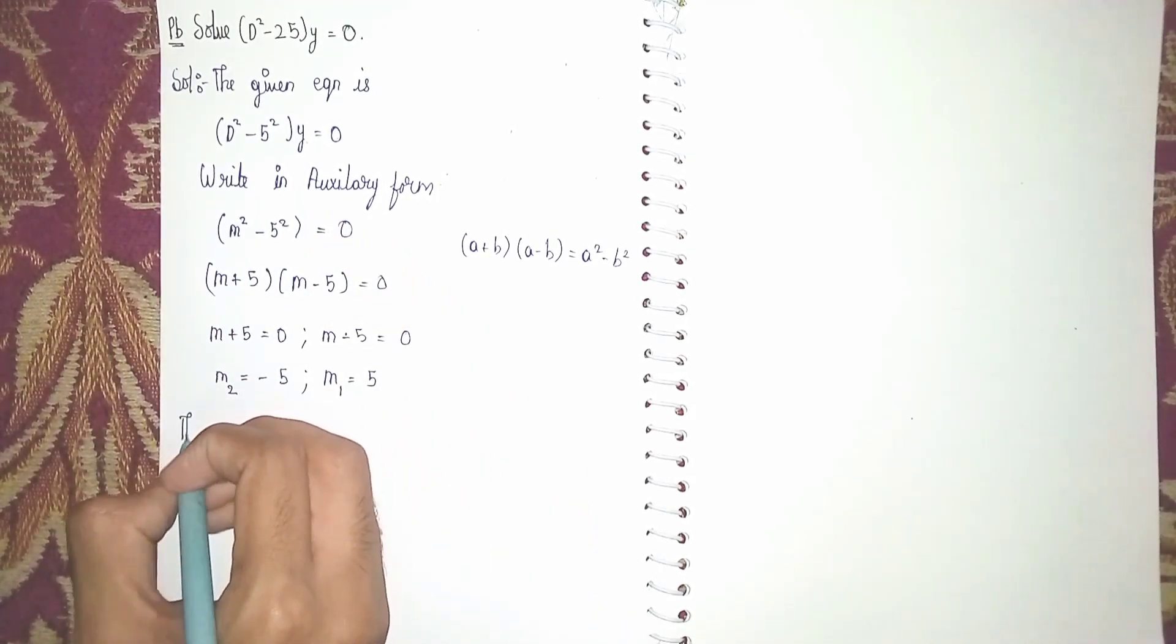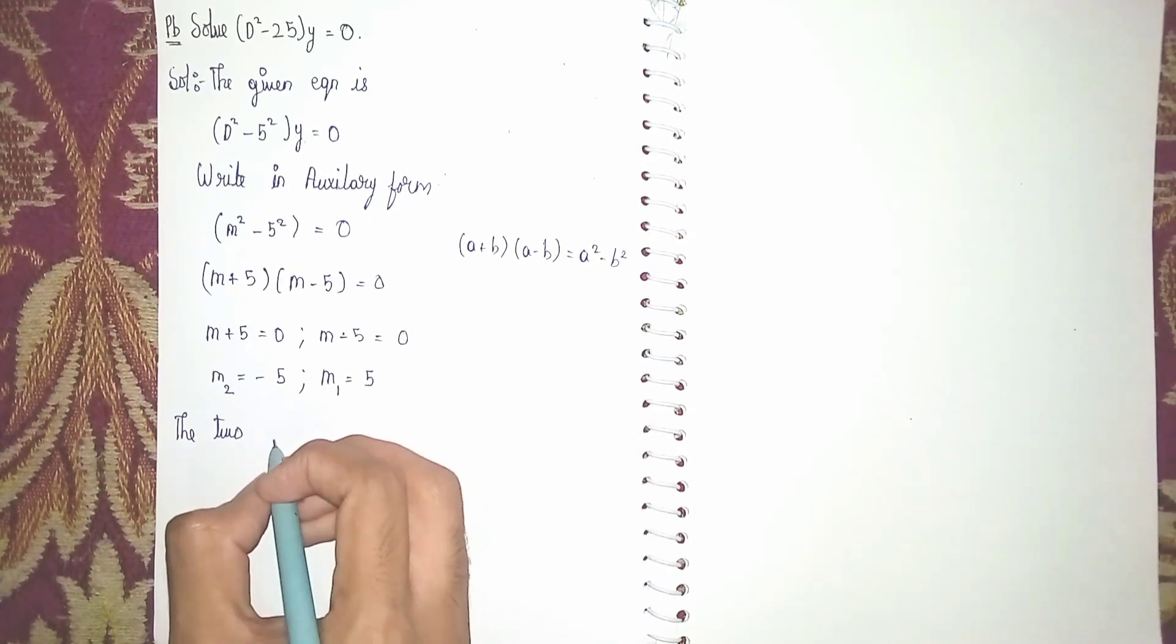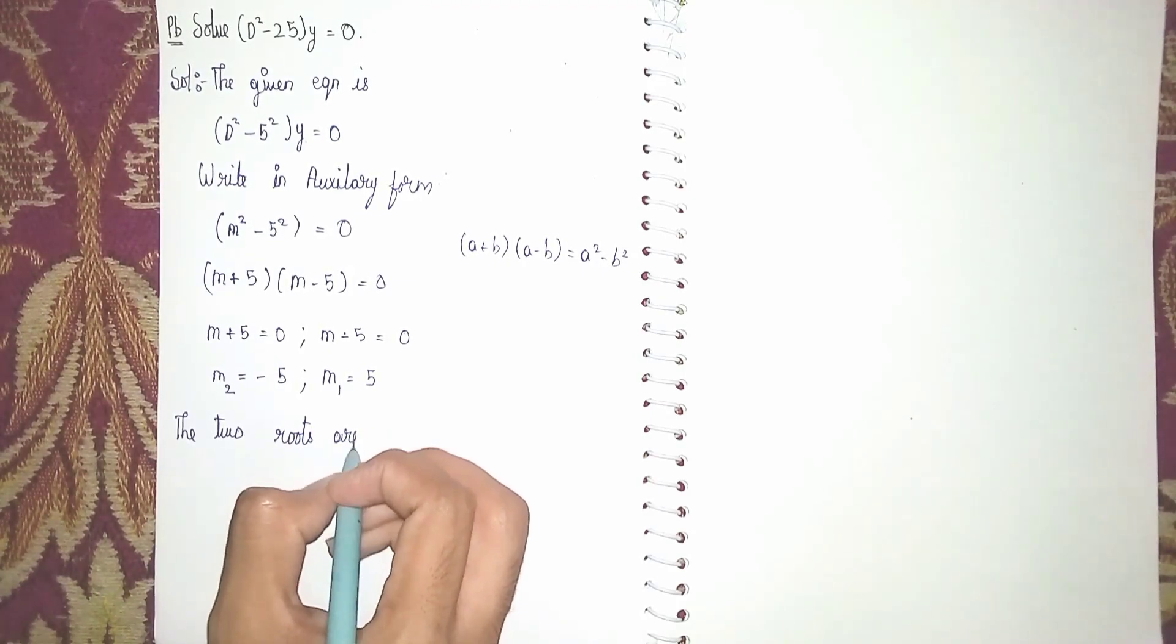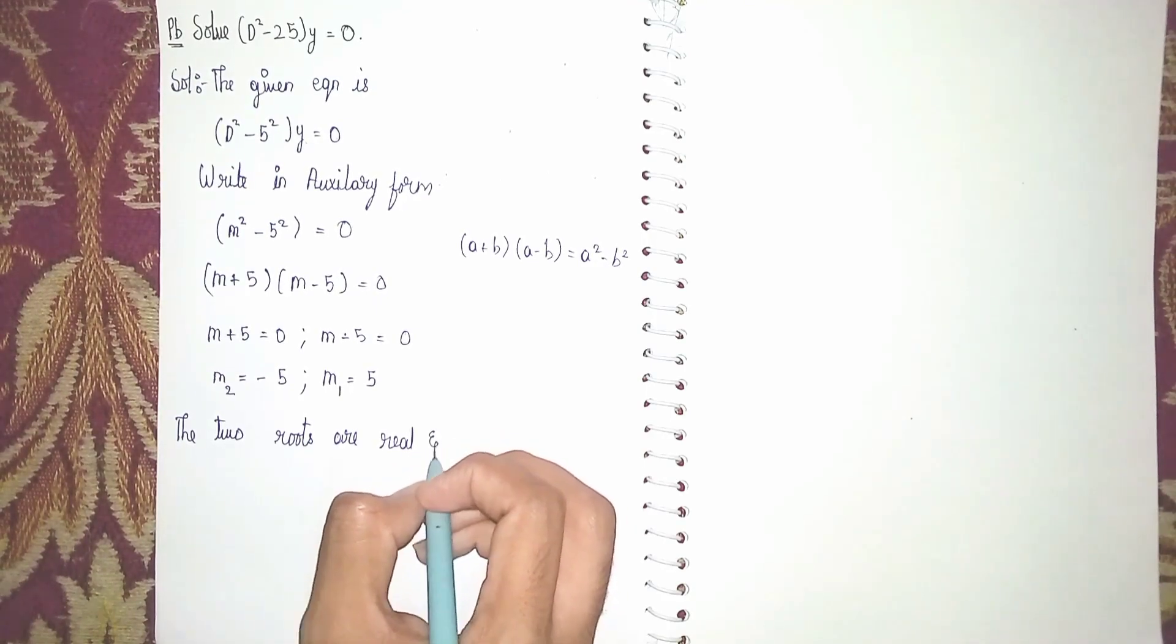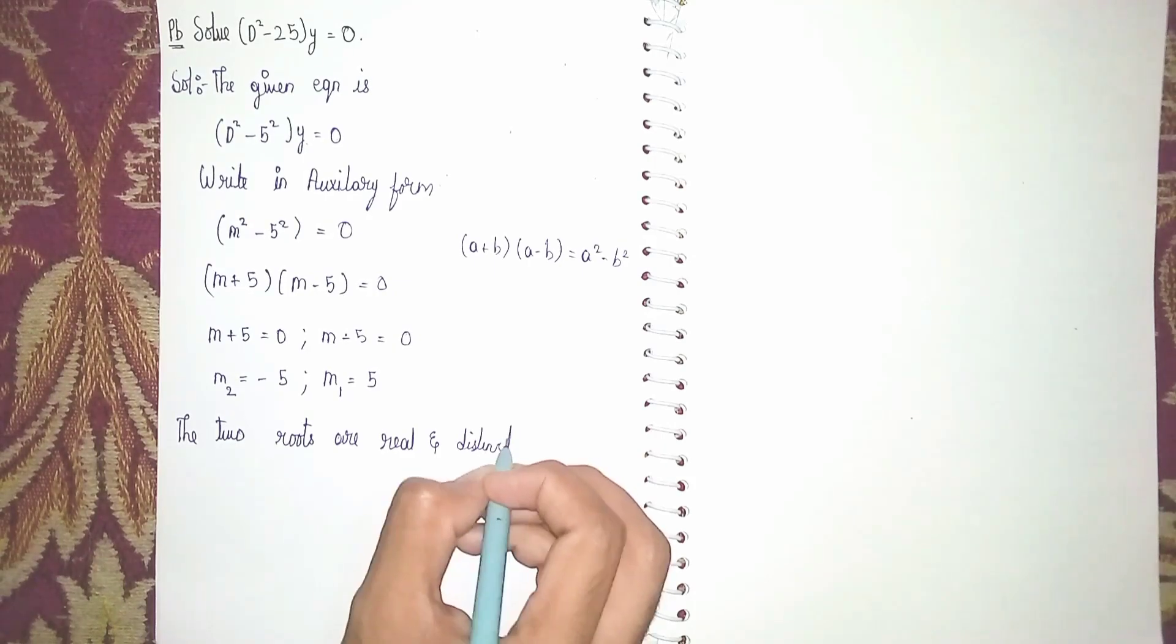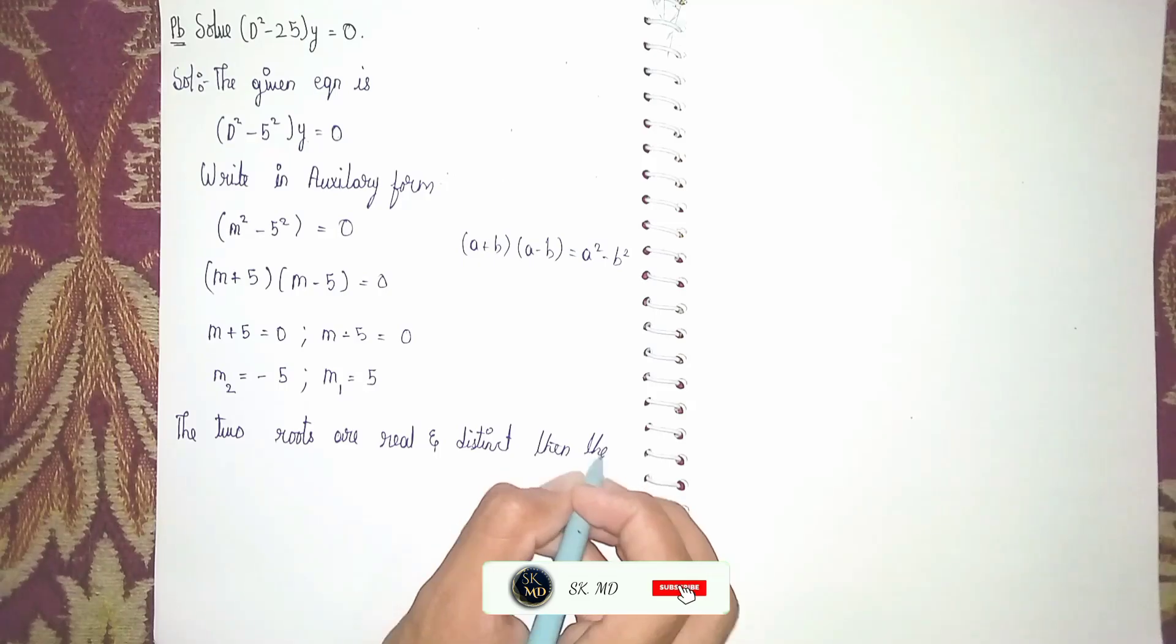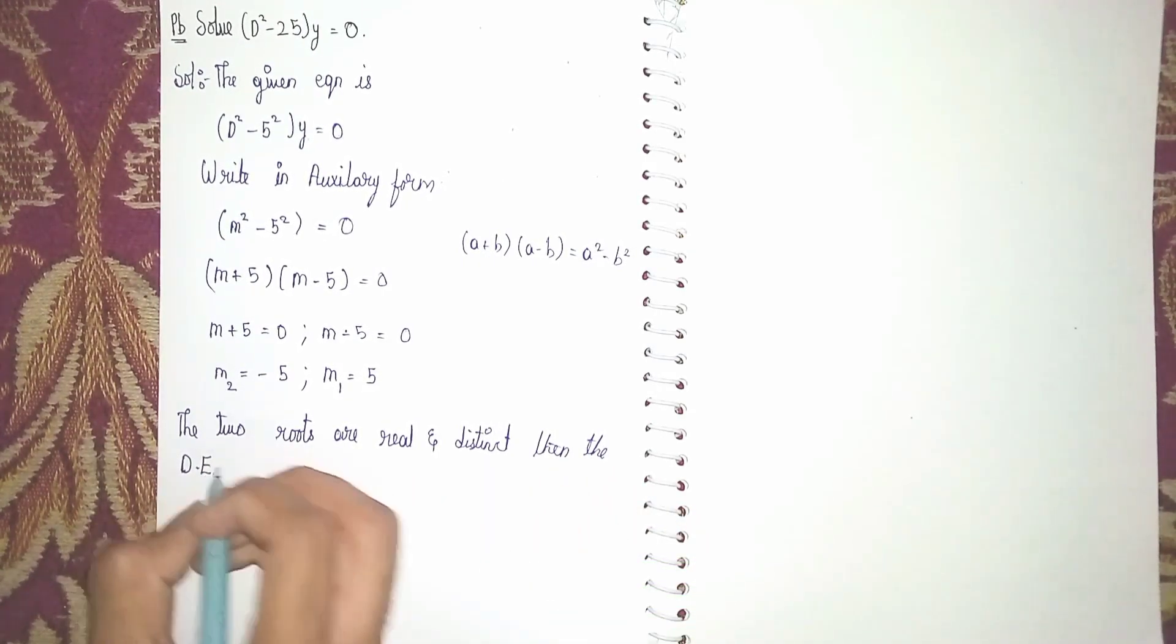The two roots are real numbers and distinct, meaning different. Then the differential equation solution is y is equal to a into e power m1 x plus b into e power m2 x.